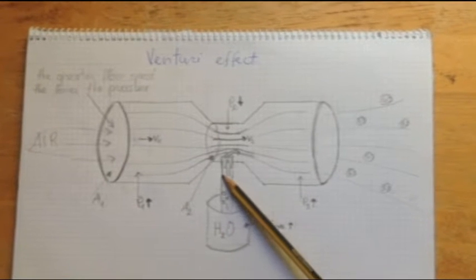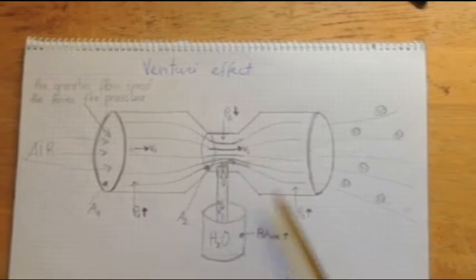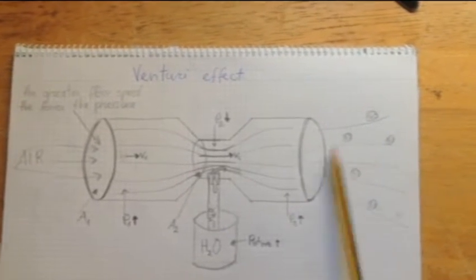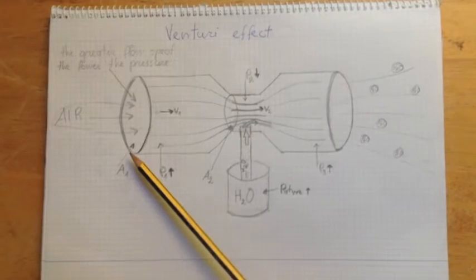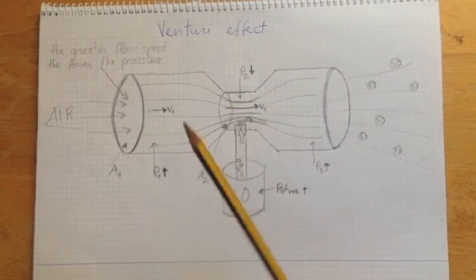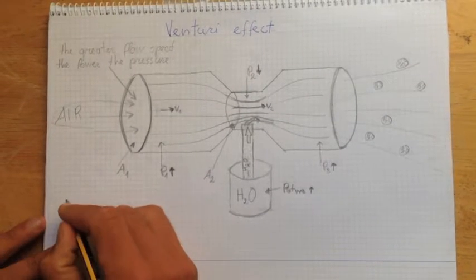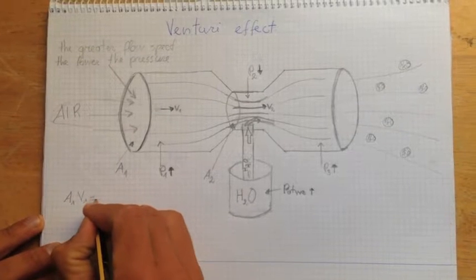Air and water drops will be mixed and go out through the tubes. And as you can see, we have two different cross-section areas, A1 and A2. So this is the equation: A1 V1 is equal to A2 V2.